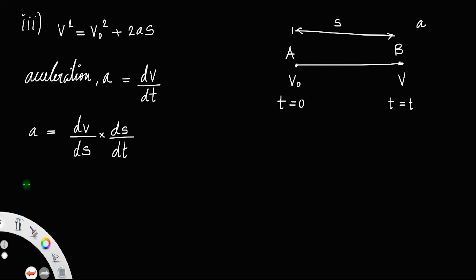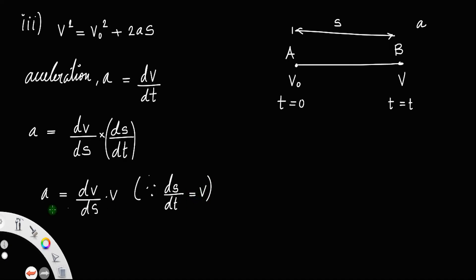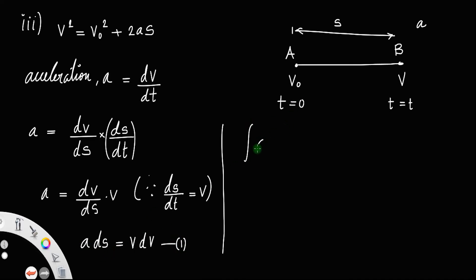Since ds/dt = v (the velocity), we get a = v(dv/ds). Taking ds to the left side: a ds = v dv. In order to get the complete displacement and velocity, we integrate: integral of a ds = integral of v dv. Since acceleration is constant, a can be taken out: a times integral of ds = integral of v dv.